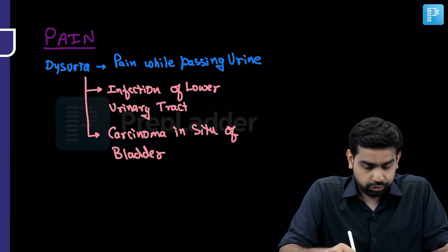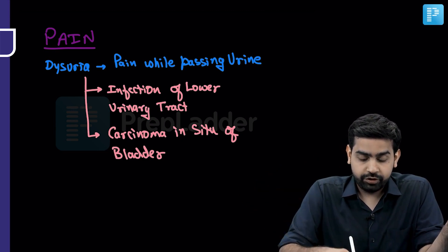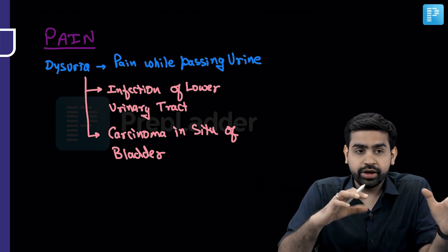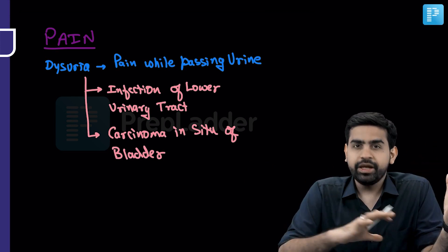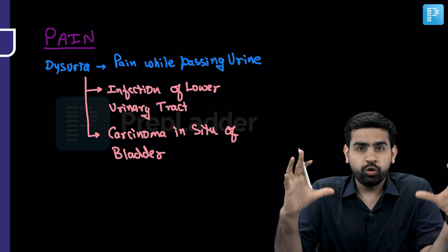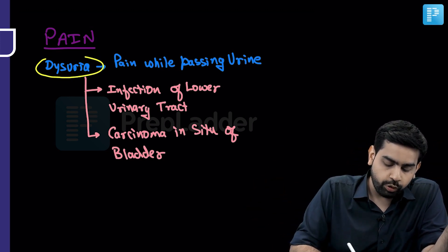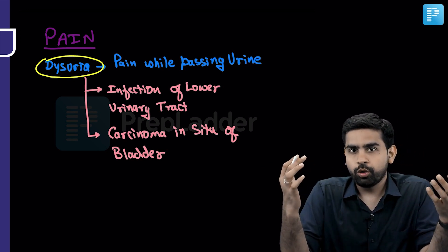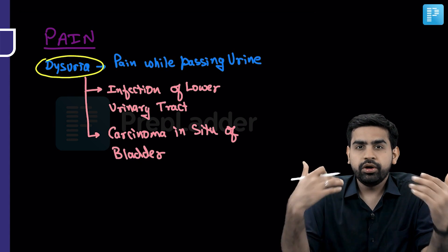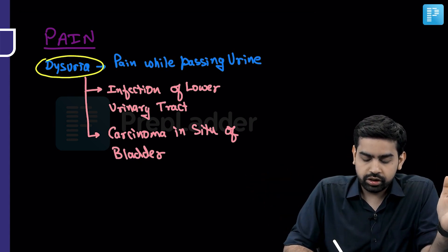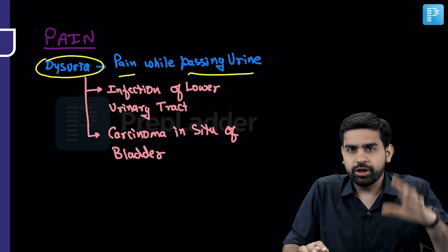The first thing let's talk about is pain. When the patient comes to you with pain, you need to understand what kind of pain it is, because depending on its characteristics you might understand what's wrong with that patient. The patient might come with dysuria — difficulty in urination or burning during urination. That is what dysuria means: pain or burning or difficulty while passing urine.